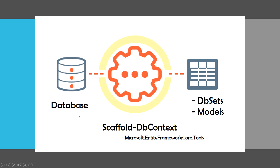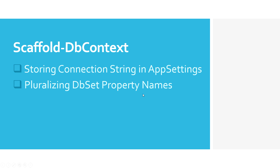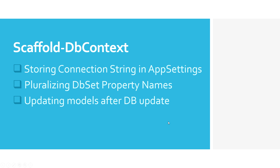It connects to your database from Package Manager Console and then outputs DbSets and models. We covered this in the last video, but the reason I'm making this video is because it does not create plural DbSet property names, and we had to pass the connection string in the command. Instead, I want to keep my connection string in app settings and make the DbSet property names plural. I'll also cover how re-running the command picks up database schema changes.